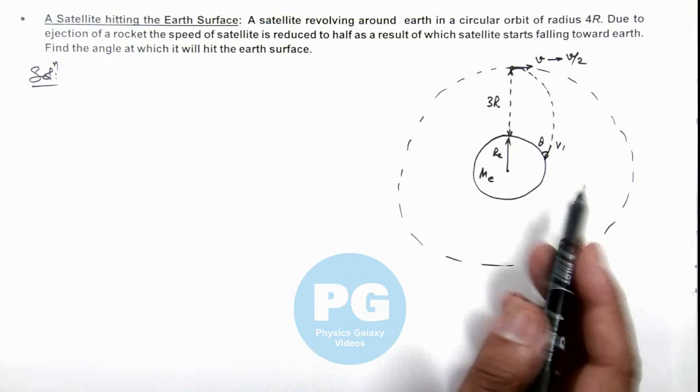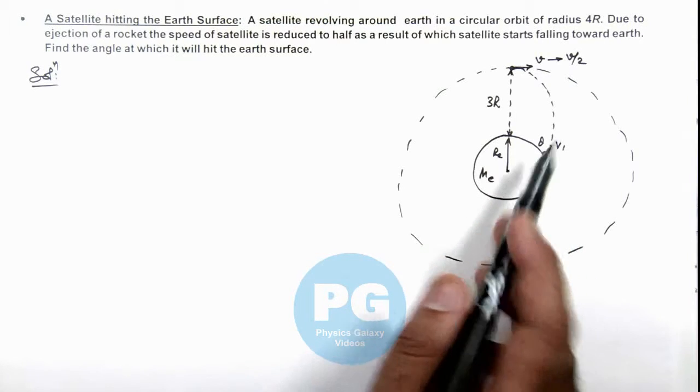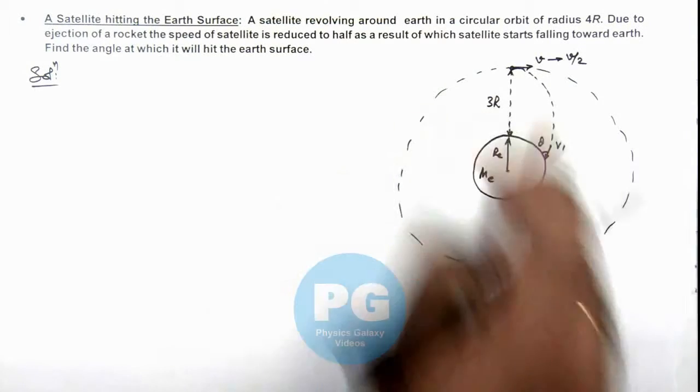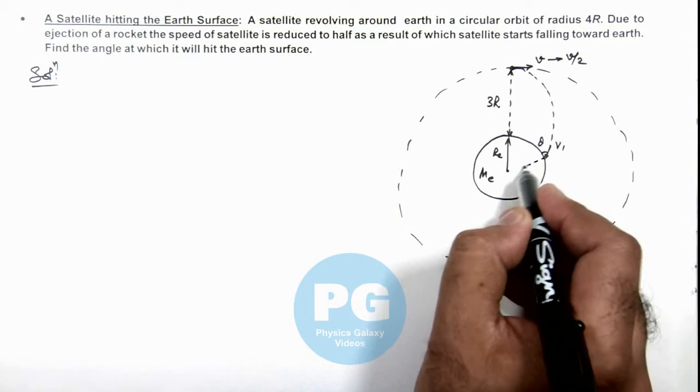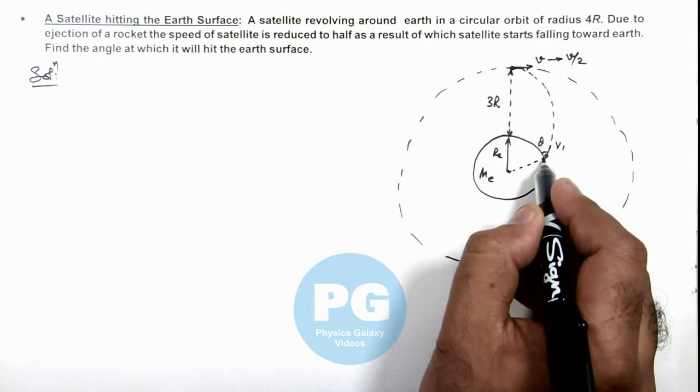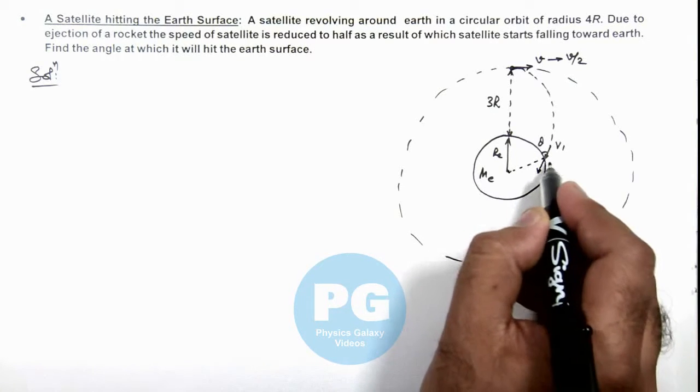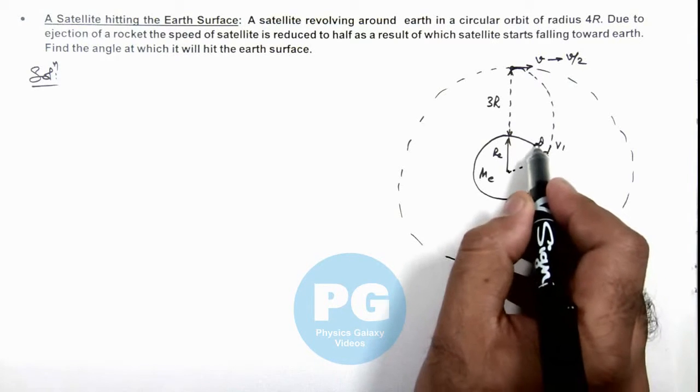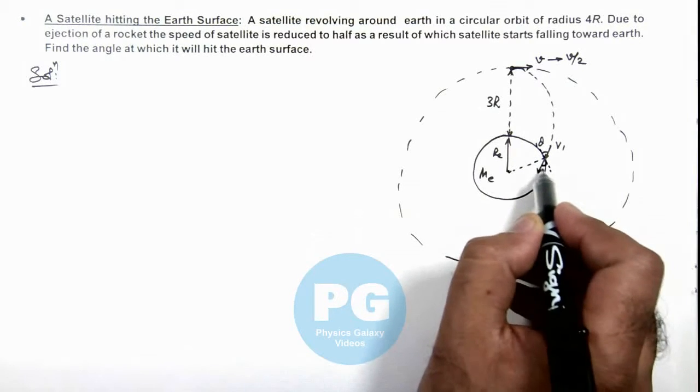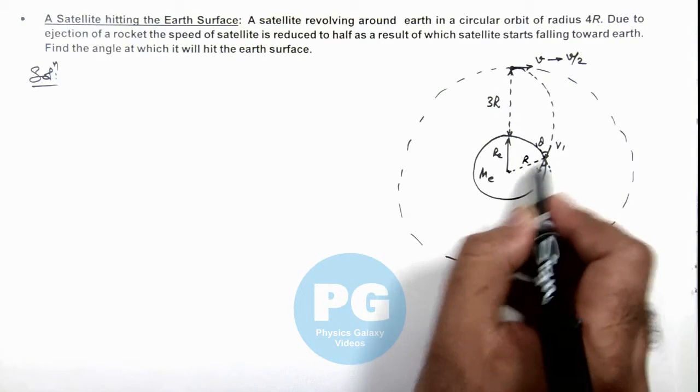This can be obtained by using energy and angular momentum conservation for the satellite motion with respect to Earth. At this point, the velocity vector is making an angle θ with the tangent to Earth, or making an angle 90° - θ with the radius of Earth.